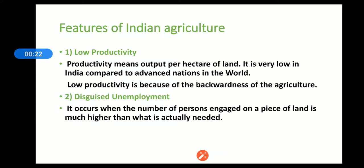First feature is low productivity. Productivity means output per hectare of land, and it is very low in India compared to advanced nations in the world. Productivity ka matlab yeh hai ki ek hectare land mein kitna production hota hai. Kisi country mein zyada hota hai, ek hectare mein same land mein kahi pe zyada hota hai production aur kahi pe kam hota hai.